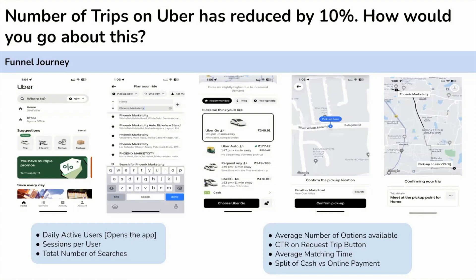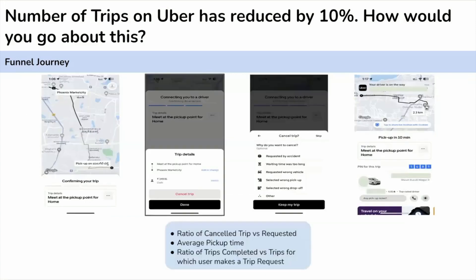We then check the ratio of cancelled rides versus rides requested — how many rides requested are getting cancelled by users. This number is fine. We also look at average pickup time — once connected with a driver, how long does it take them to reach the pickup location — and the ride completion rate, meaning how many of all rides requested are actually completed. The interviewer says all these metrics are fine.